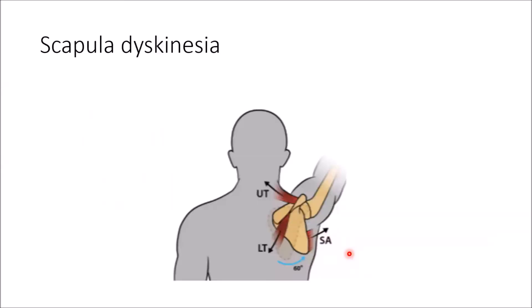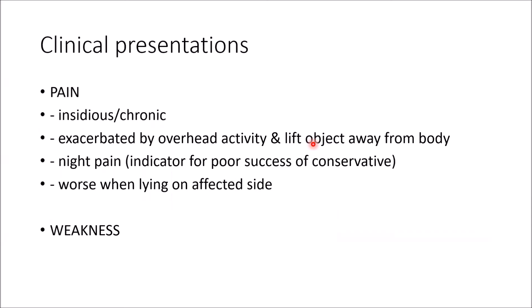For scapular dyskinesia, the relevant muscles are mainly the upper trapezius, lower trapezius, and serratus anterior. The last 60 degrees of shoulder abduction involves scapular movement. If this is restricted, elevation after 120 degrees will cause impingement because the shoulder needs to go further.